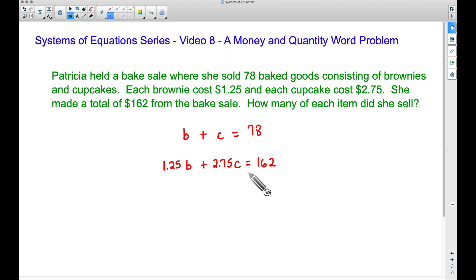However, I'm going to apply the elimination method because the b's are lined up, the c's are lined up, the equals are lined up, and we have our constants over here. It does not matter which variable we get rid of, but I'm going to multiply both sides by -1.25. By doing this on both sides times -1.25, this will allow us to get rid of the b's, to eliminate the b's.